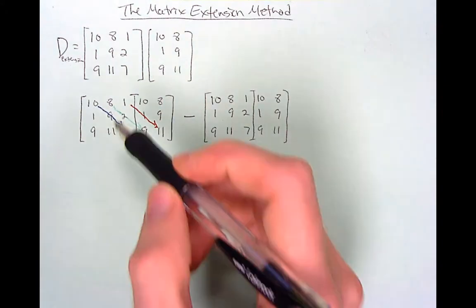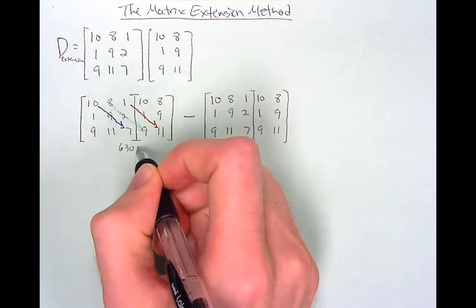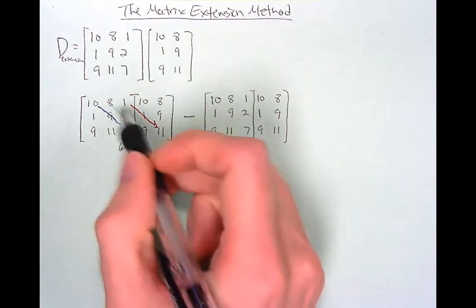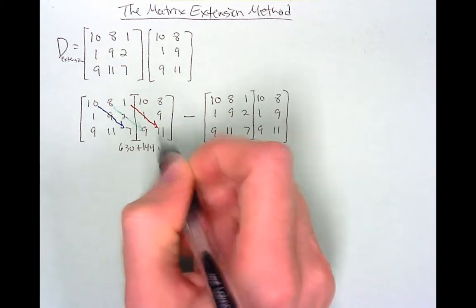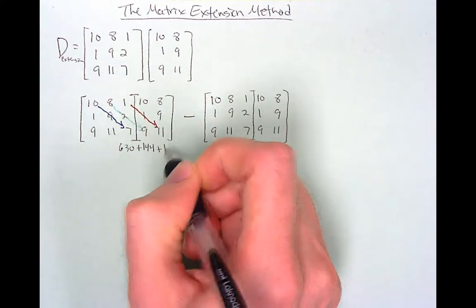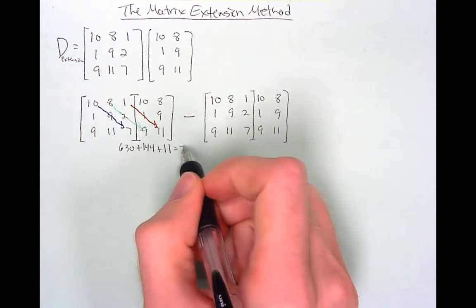10 times 9 times 7 will give us 630 plus 8 times 2 times 9 is 144 plus 1 times 1 times 11 is 11. You add those together and you get 785.